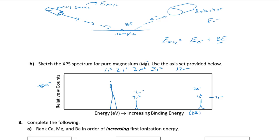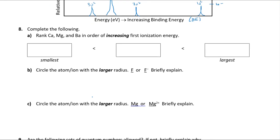Next comes the 2p peak — a large peak of height ~6 because there are six electrons. The energy differences get smaller as you go out, so the 3s peak at height ~2 is close in binding energy to the 2p. Core electrons closest to the nucleus require the most binding energy to remove; valence electrons are easier to remove. That gives us four peaks total for magnesium.